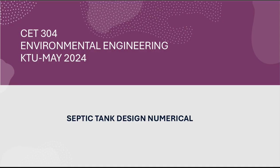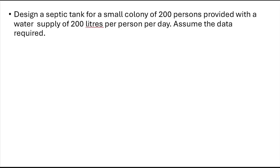Hello, today we are going to discuss a septic tank design number 3. This is a previous year question which was asked during the exam May 2024. This is from module 5 of CET 304. We will go into the question. You need to design a septic tank for a small colony of 200 persons with a water supply of 200 liters per capita per day, assuming the data required.